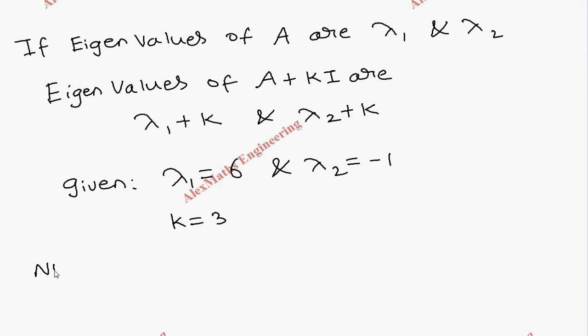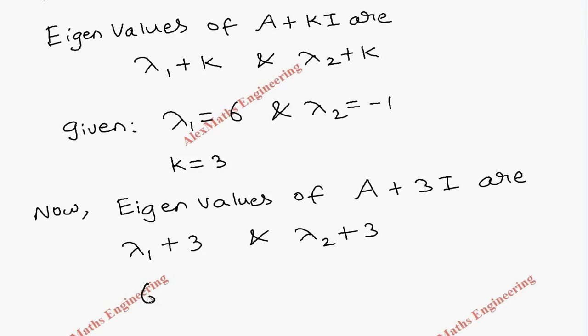So now, the eigenvalues of the matrix A + 3I are λ₁ + 3 and λ₂ + 3. λ₁ is 6, so 6 + 3, and λ₂ is -1, so -1 + 3.